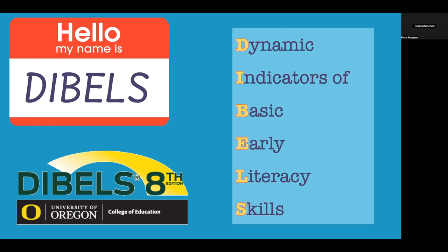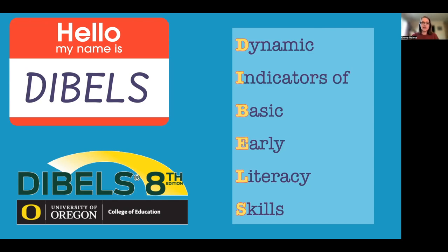The measures in DIBELS are very highly predictive and really well validated by research and development with lots and lots of children, making it a very reliable assessment. Each subtest provides benchmarks with data normed against age-level peers, and each of the subtests takes about one minute to complete.